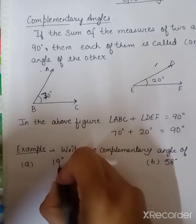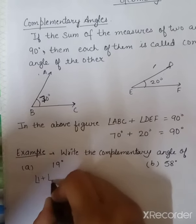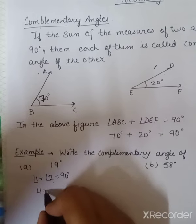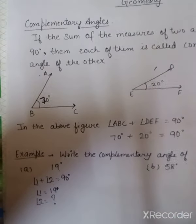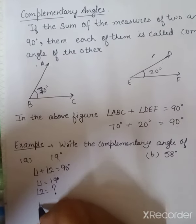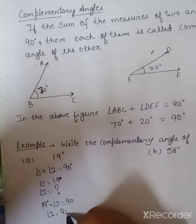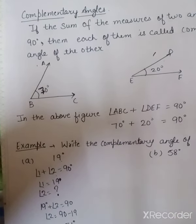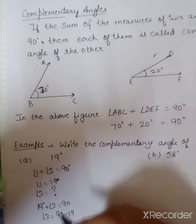Write the complementary angle of 19 degrees. We know that for complementary angles, angle 1 plus angle 2 should be equal to 90 degrees. We know one angle but we don't know the second angle. So we write: 19 degrees plus angle 2 equals 90. Therefore, angle 2 equals 90 minus 19, which gives us 71 degrees. The complementary angle of 19 degrees is 71. When we add 71 plus 19, we get 90 degrees.